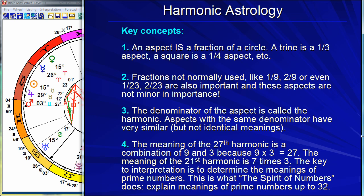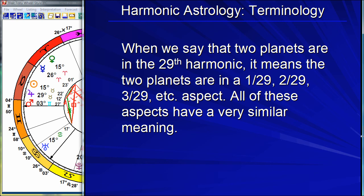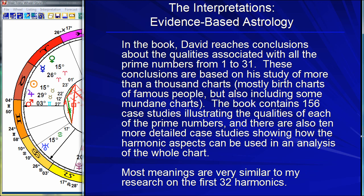In this book, The Spirit of Numbers, the author David Hamblin explains the meanings of the prime numbers up to 32. When we say two planets are in the 29th harmonic, all it means is that the planets are 1/29th, 2/29th, 3/29th, or some other 29th of a circle apart. We don't care how many degrees that is because it would be tedious to figure out. But if two planets are some 29th of a circle apart, they're in this 29 vibration. And in this book, David Hamblin explains to us what 29 means. How does he come up with these meanings? It's evidence-based.